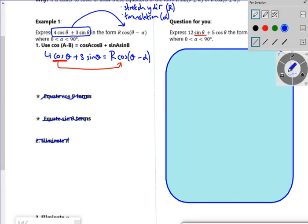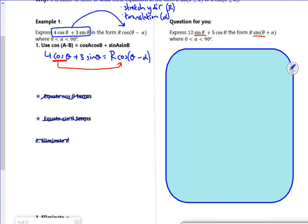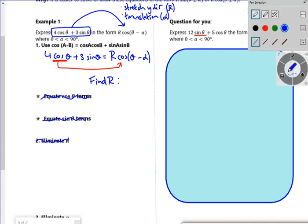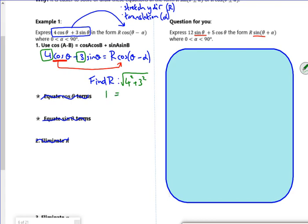Right so I'm going to do it my sneaky way which always works. The first thing we want to do is Pythagoras of the two numbers that we've got on the left side and this will find r. So I'm just doing Pythagoras of these two numbers. So it's going to be the square root of 4² plus 3², which we know is 5. That's it.